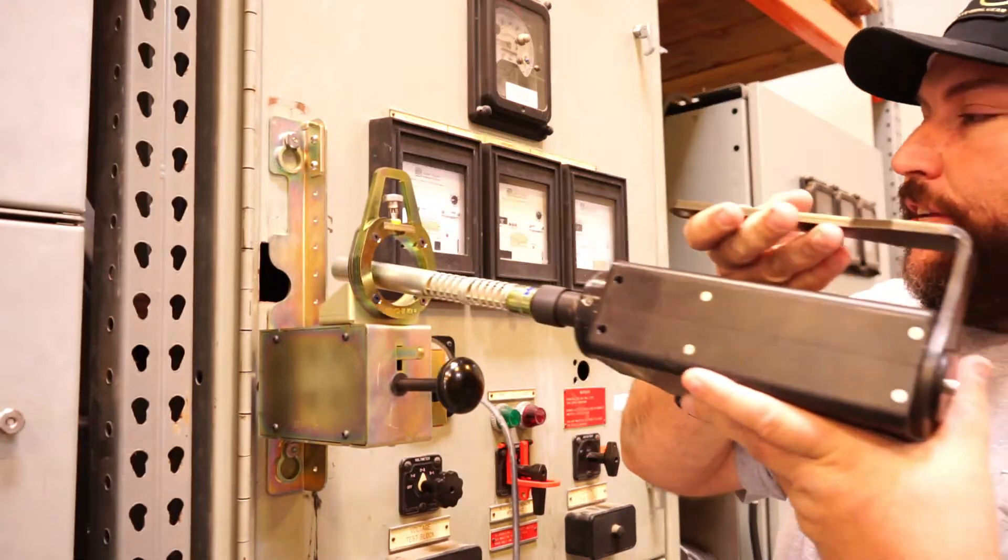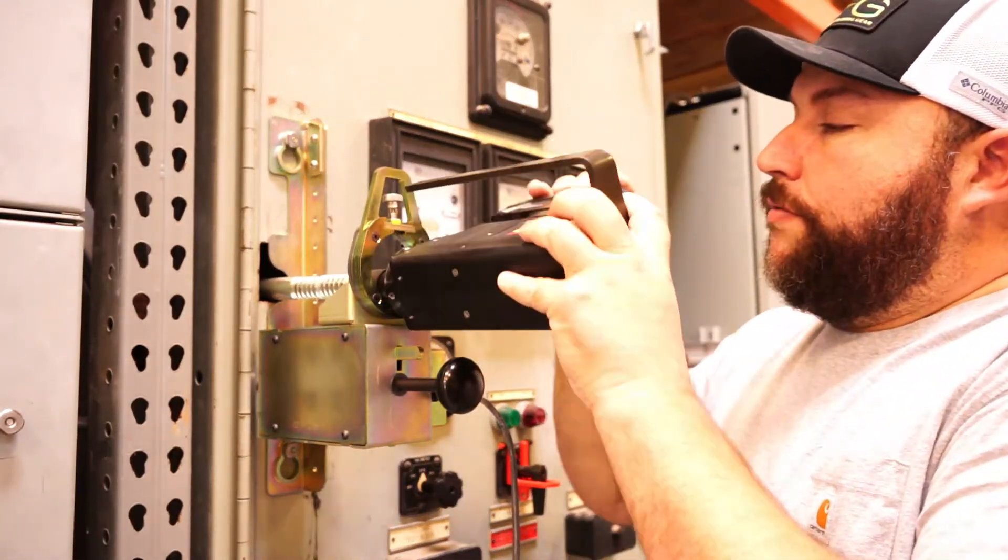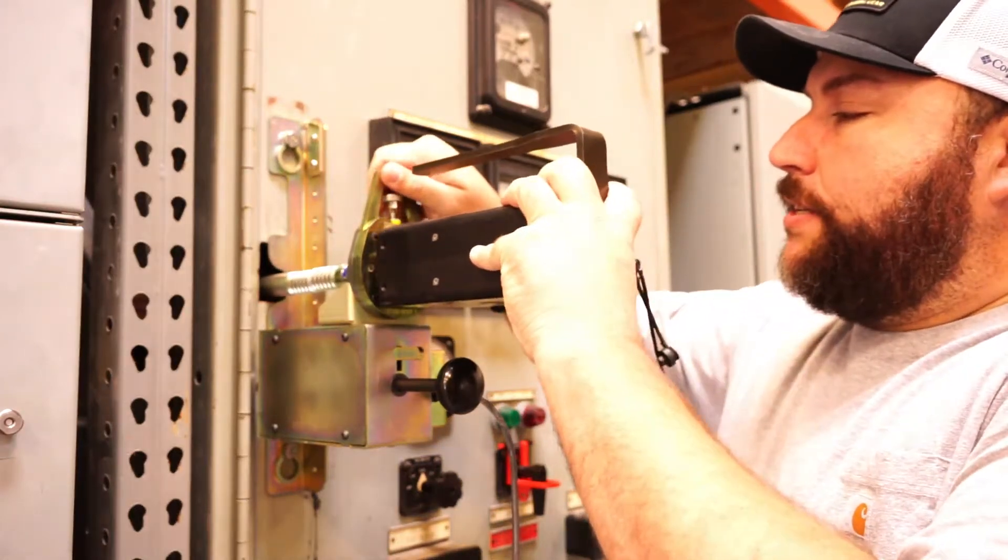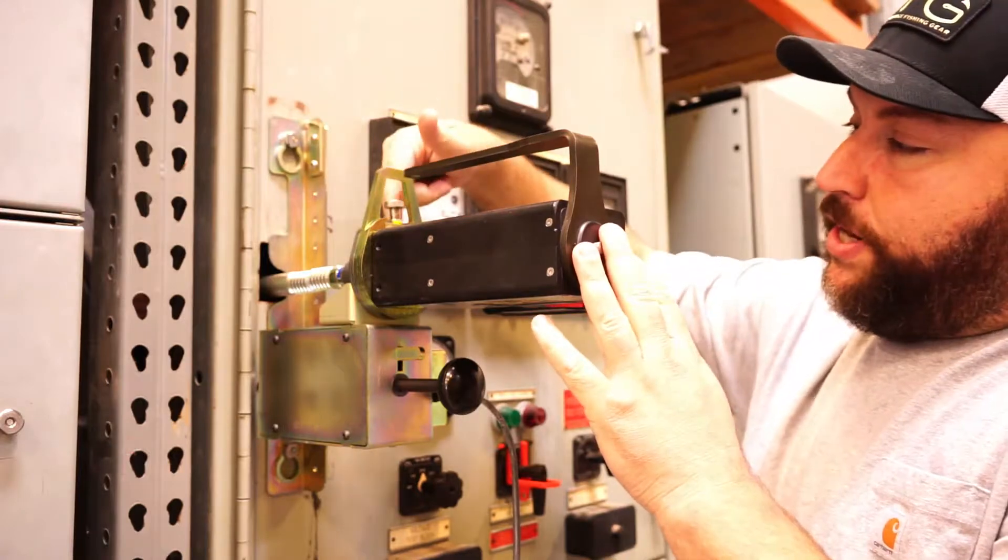To insert the racking shaft here, it slides in, rotate it until it engages on the hex, slides into place, and turn your lock pin and make sure your lock pin is all the way seated.